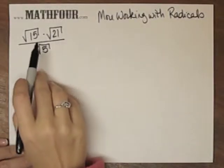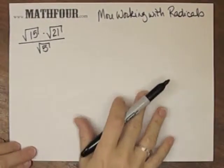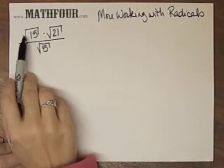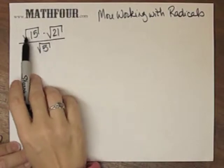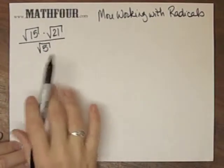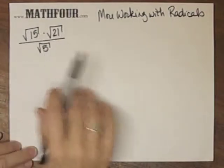A little bit more working with radicals. Here we have a fraction with multiplication on the top and radicals embedded all over the place. Notice that division, multiplication, and radicals are all sort of in the same world, so they're kind of interchangeable and scoochable.